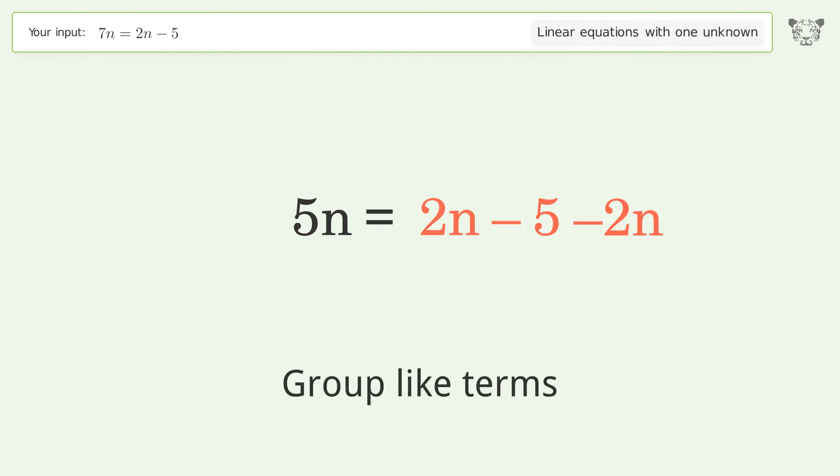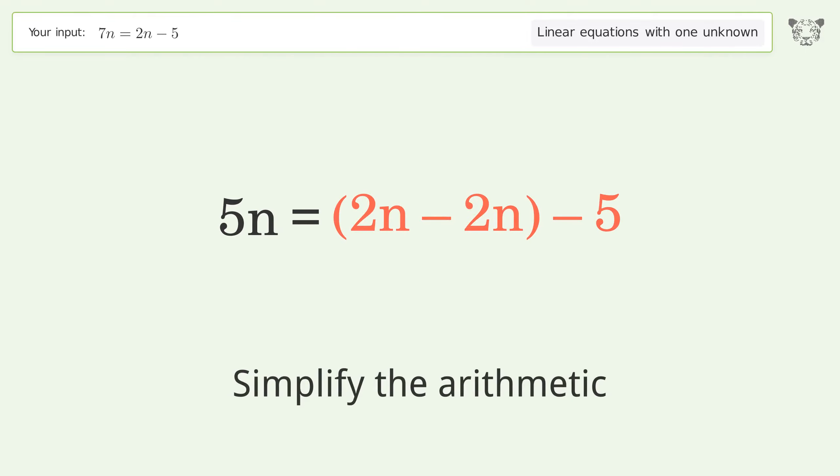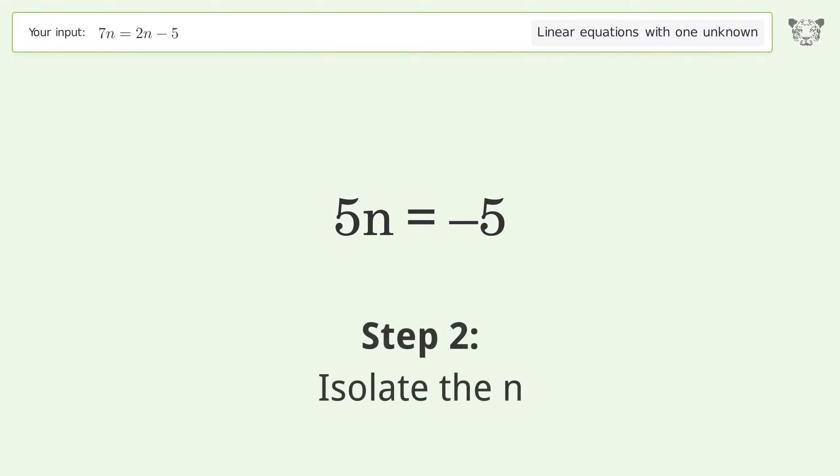Group like terms. Simplify the arithmetic. Isolate the n. Divide both sides by 5. Simplify the fraction.